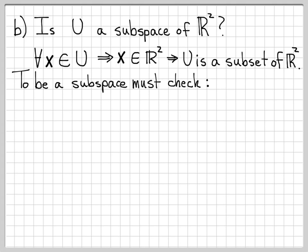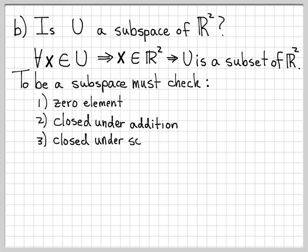To be a subspace, there's three things that we need to check. Given that we're already working with a subset of the vector space R2, to establish that u is a subspace, we just need to check three things. The first thing we need to check is we need to make sure that there's a zero element present in u. We need to make sure that this set is closed under addition, vector addition, and it also needs to be closed under scalar multiplication.